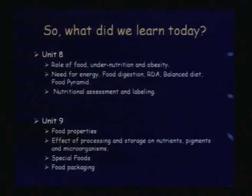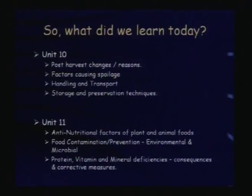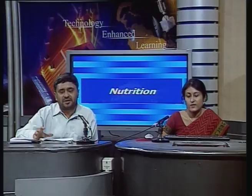In summary: Unit 8 covered the role of food, under-nutrition and obesity, energy needs, food digestion, RDAs, balanced diet, and nutritional assessment. Unit 9 covered food properties and special foods. Unit 10 covered post-harvest changes and factors causing spoilage. Unit 11 covered anti-nutritional factors, food contaminants, and mineral and vitamin deficiencies, their consequences, and corrective measures. Thank you, Dr. Para, for comprehending this vast subject in a short time.